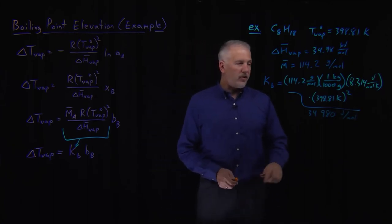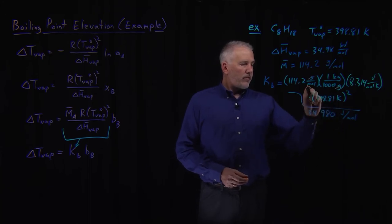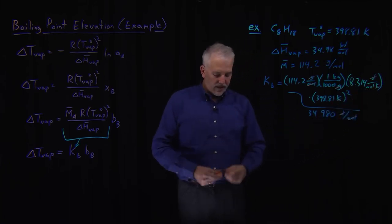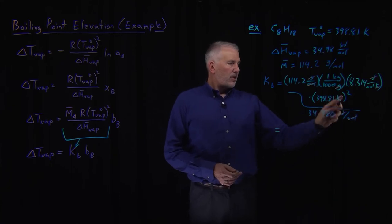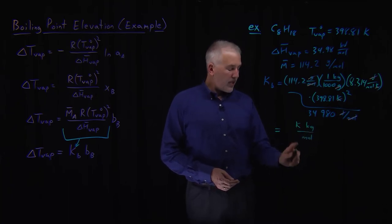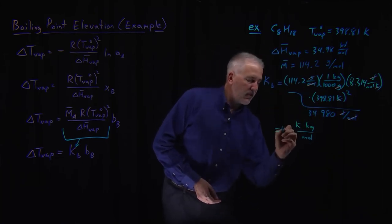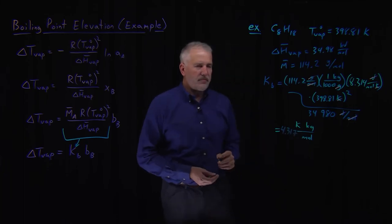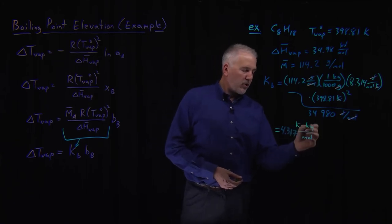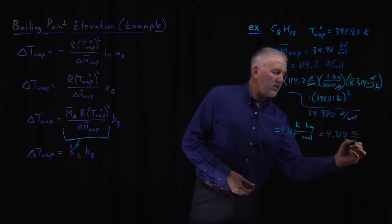The units are going to work exactly like they did for the freezing point depression constant. We've converted grams to kilograms. One of these moles disappears, the joules disappear. One of these Kelvin disappears with this Kelvin, and what we're left with is units of Kelvin kilogram per mole. The numerical answer, if I multiply and divide these numbers, is four sig figs. So 4.317 Kelvin per kilogram, or 4.317 degrees Celsius per molal is an equivalent way to think about it.